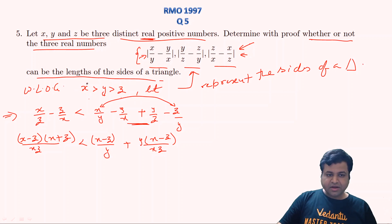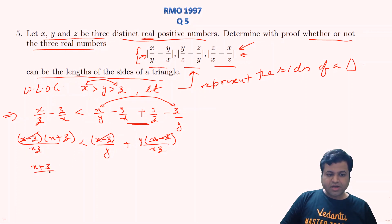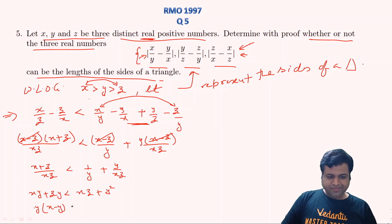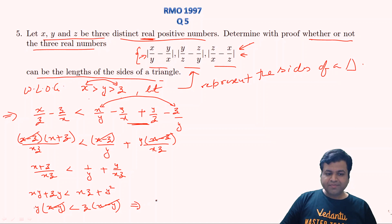Since x > z by our assumption, (x − z) cancels from both sides and the inequality direction does not change. We are left with (x + z)/xz < 1/y + y/xz. Cross-multiplying, we get xy + zy < xz + y², which rearranges to y(x − y) < z(x − y). Since x > y, we can cancel (x − y) without changing the inequality, giving us y < z.